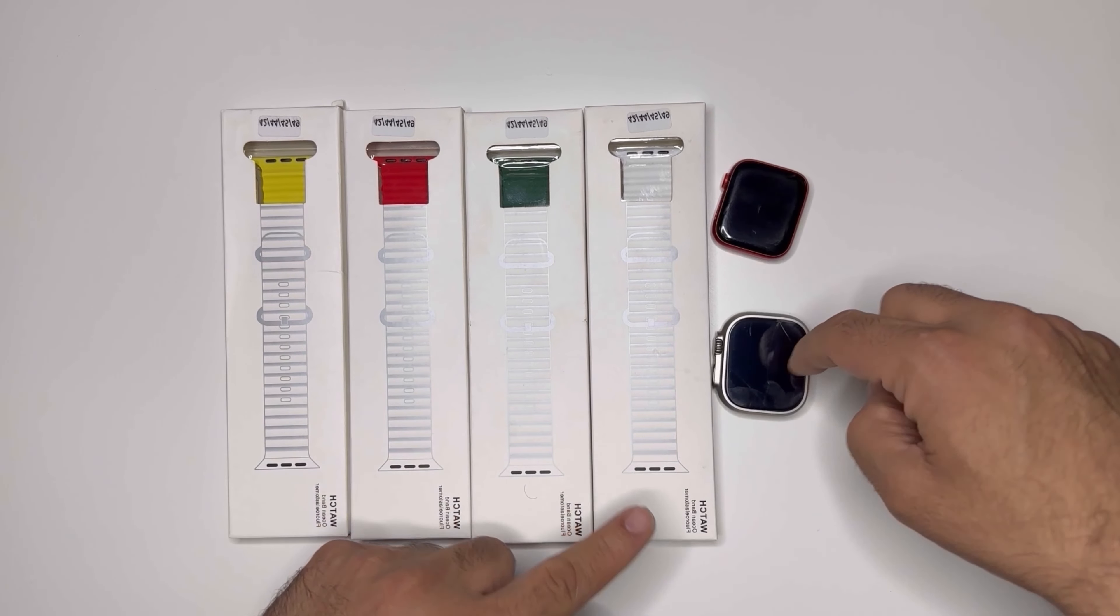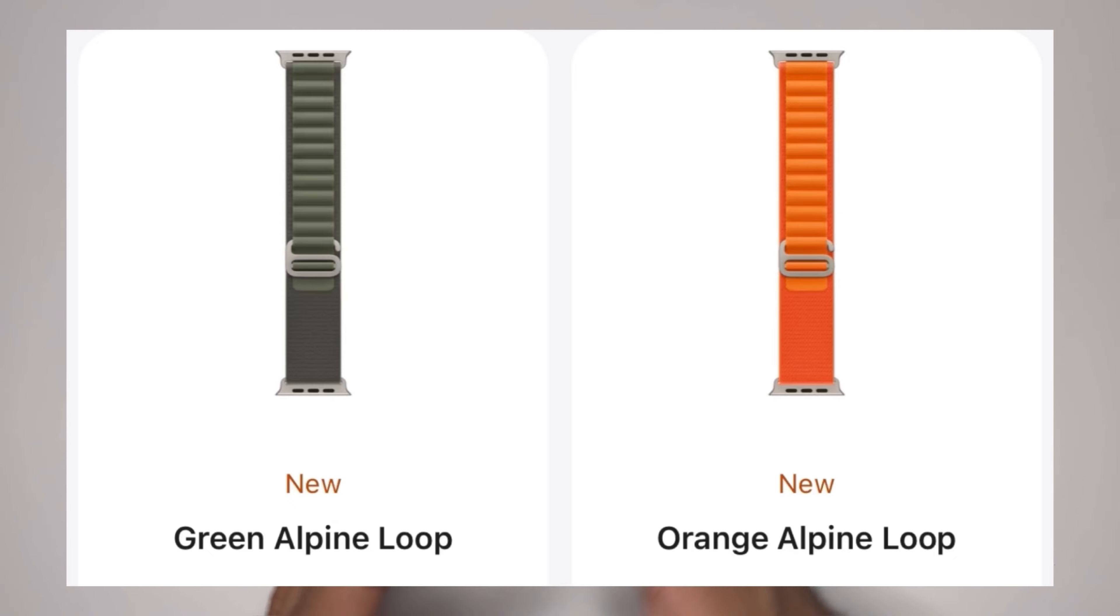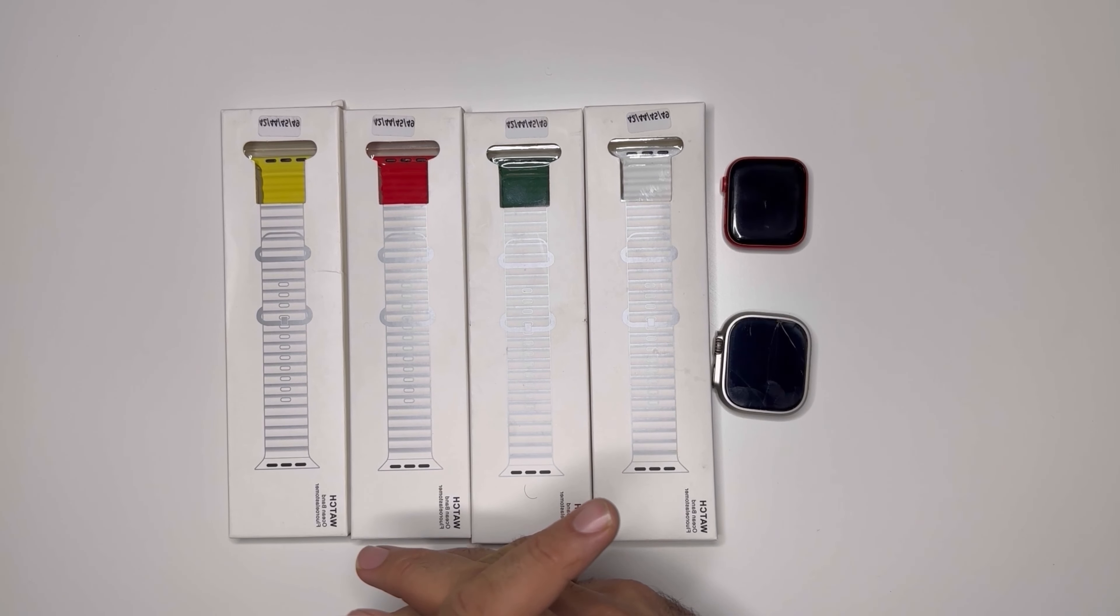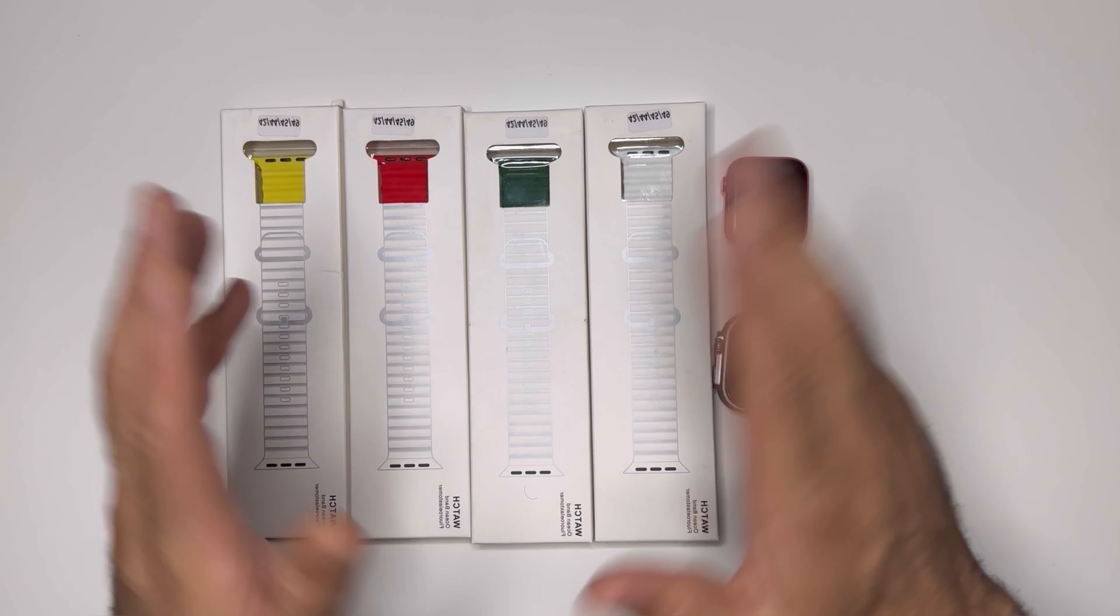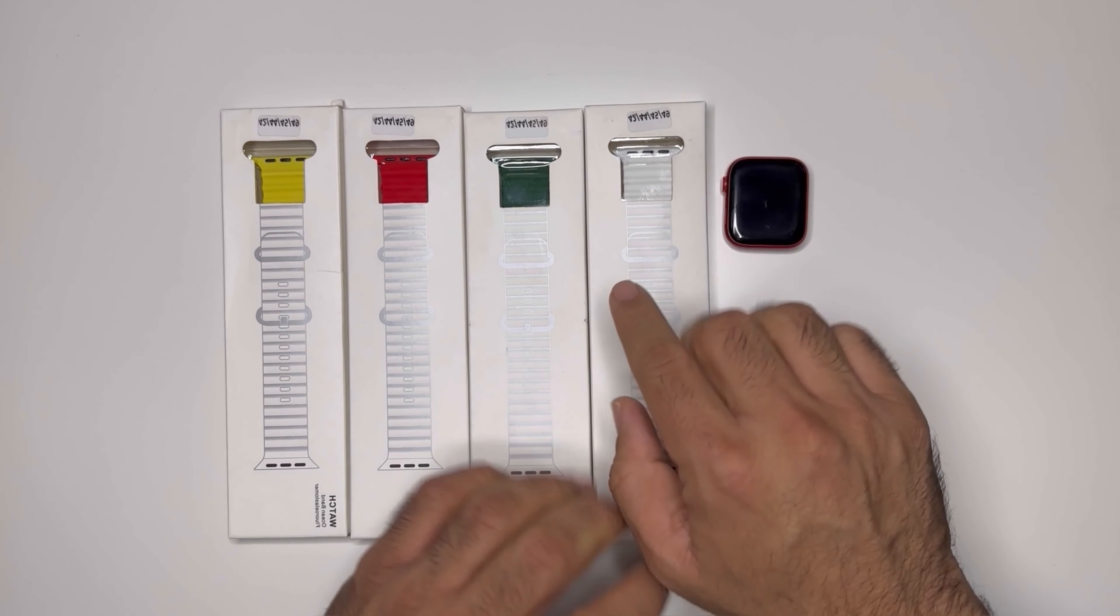Apple launched Ultra with three types of bands: Ocean bands, Alpine bands, and Trail Loop bands. Today I'm doing an unboxing of the Ocean band. Officially it is launched in yellow, white, and blue.